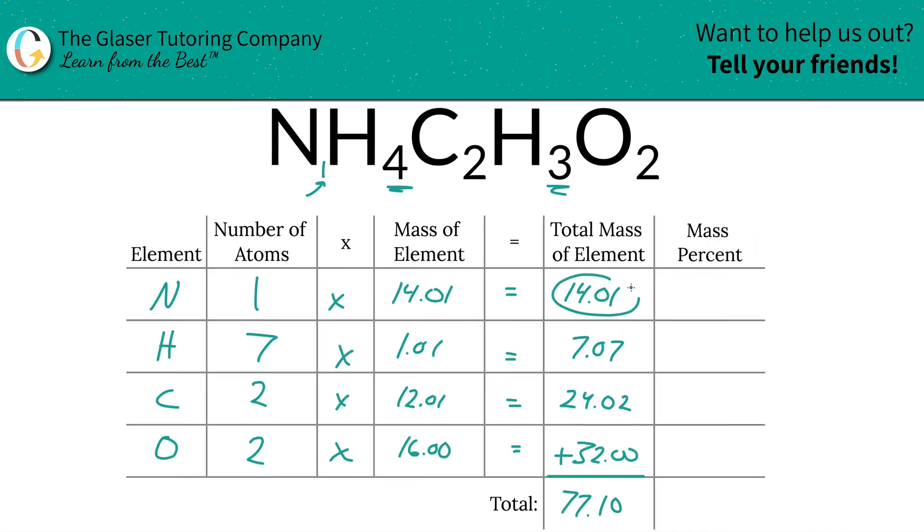To find the mass percent of nitrogen, we're simply going to take the total mass of that nitrogen, 14.01, and divide it by the total mass of the entire compound, 77.10, and then multiply it by 100 because we need it in percentage terms. This is a simple percent: part over whole times 100. Hence the nice part about this table - all the information you need to calculate those percentages now are going to be found in that particular column.